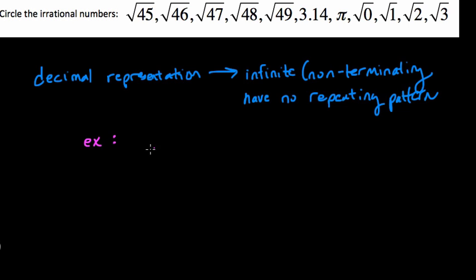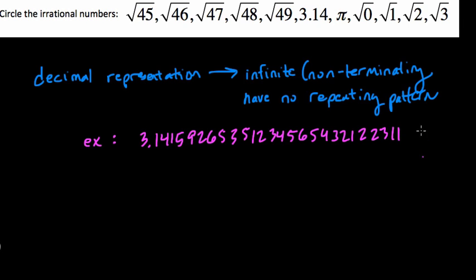is something like, let's say, 3.1415926535. And then you might find, okay, what happens after this? 1, 2, 3, 4, 5, 6, 5, 4, 3, 2, 1, 2, 2, 3, 1, 1. You keep going. And even if there is some kind of pattern,